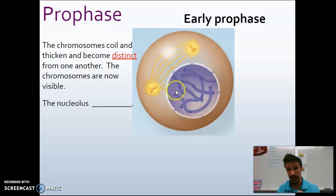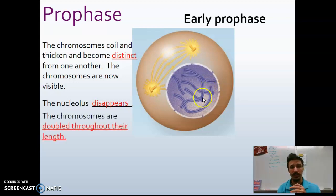The nucleolus, do you see that? I don't. That's because it disappears, it's broken down, because we don't need to make any ribosomes right now because the cell is just going to be dividing. Chromosomes are doubled throughout their length. Now what that means is just keep in mind the chromosomes at this point have doubled. We went from 46 chromosomes to 92 chromosomes, so 46 can end up in the new cell.